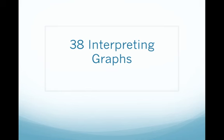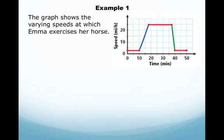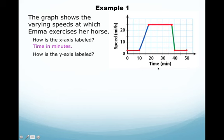Lesson 38: Interpreting Graphs. Example 1. The graph shows the varying speeds at which Emma exercises her horse. How is the x-axis labeled? The x-axis is down here and it's labeled as the time in minutes.